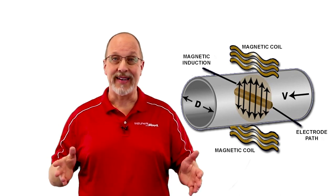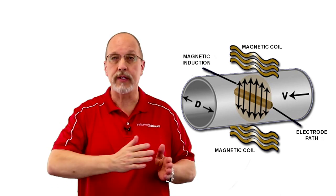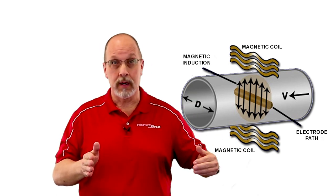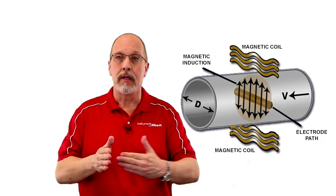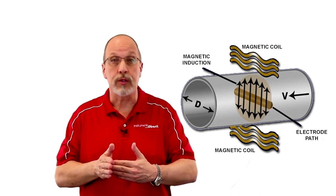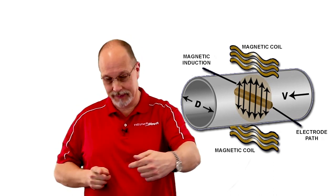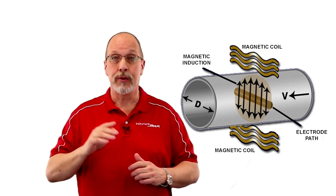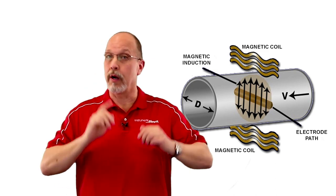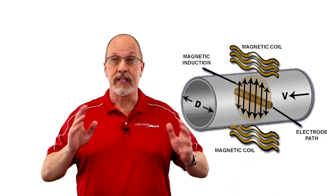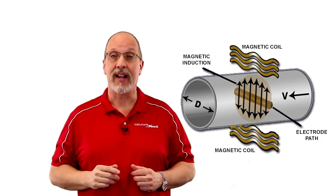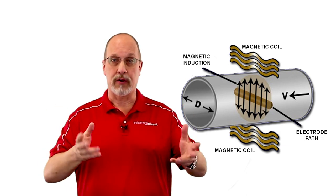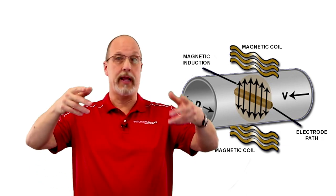Now this magnet creates a magnetic curtain across that pipe. And when the conductive liquid, water, hits this curtain at a right angle, it creates a small amount of current, which is monitored by the two electrodes. The faster the liquid flows through the magnetic curtain, the more current is generated. Since the current is proportional to the velocity of the liquid flow, we just factor in the pipe size to calculate the volumetric flow like gallons per minute.